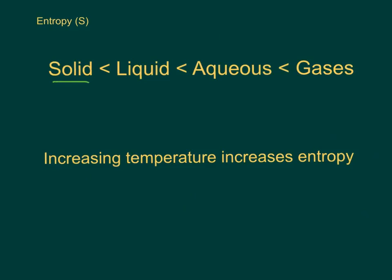So if we're comparing solids and liquids and aqueous and gases, solids have the least entropy. They're the most ordered. Gases have the most entropy. They're the most disordered.